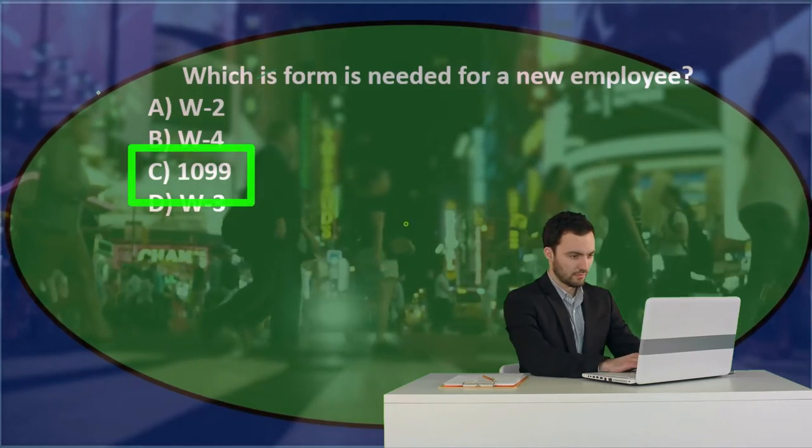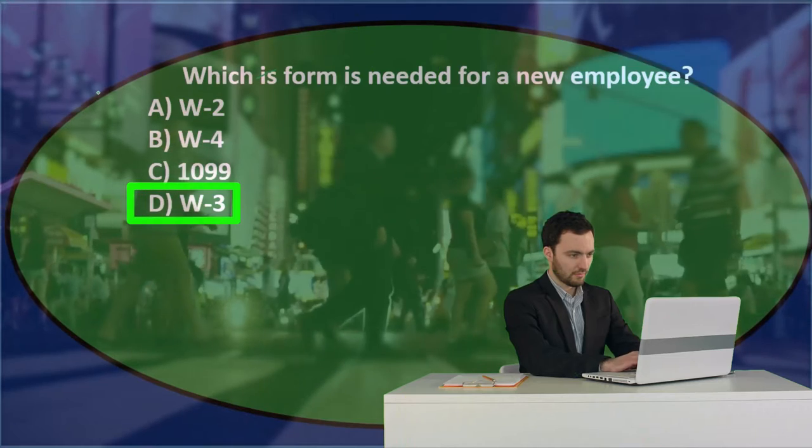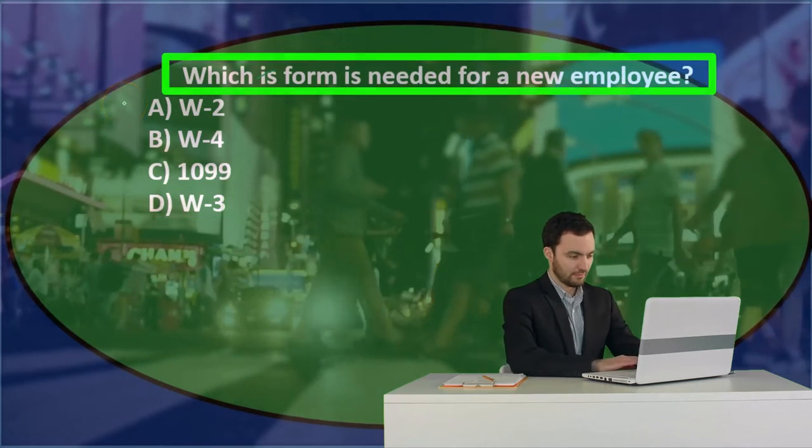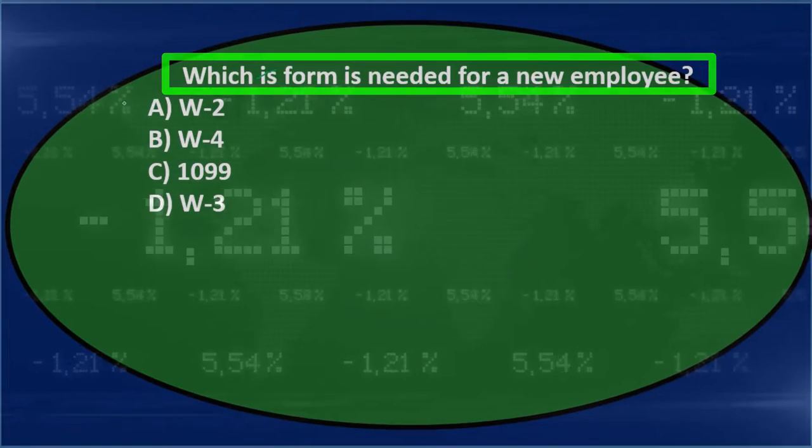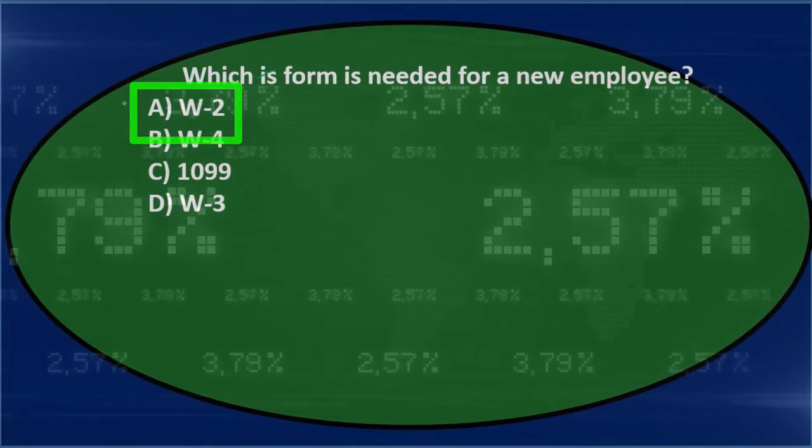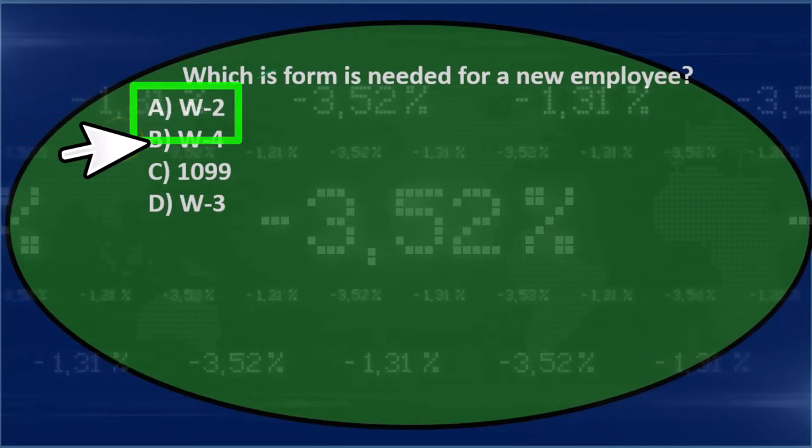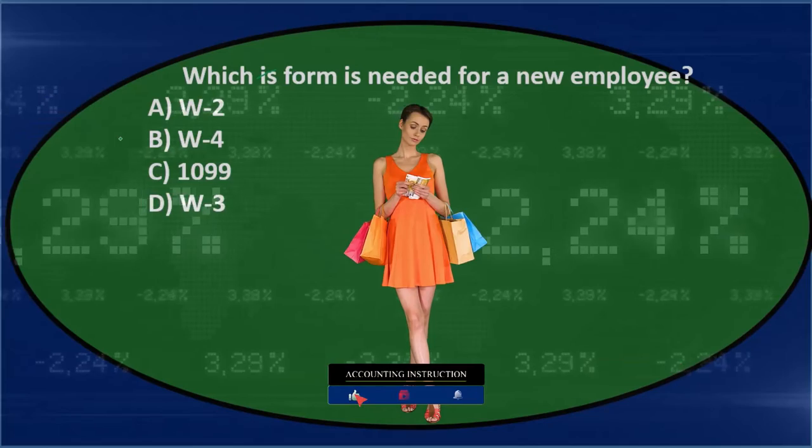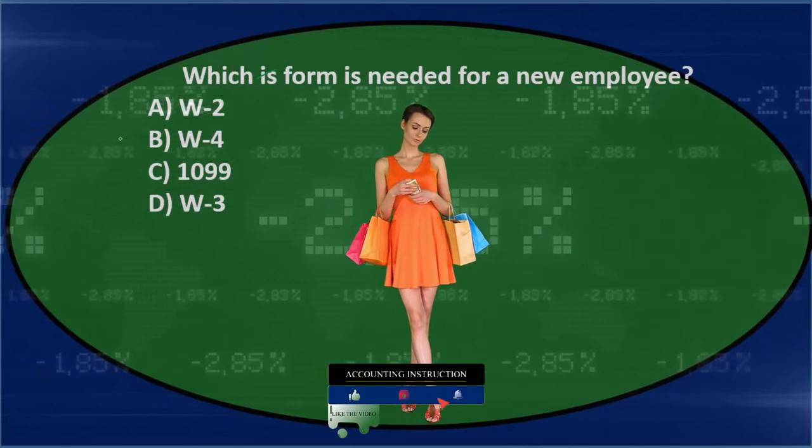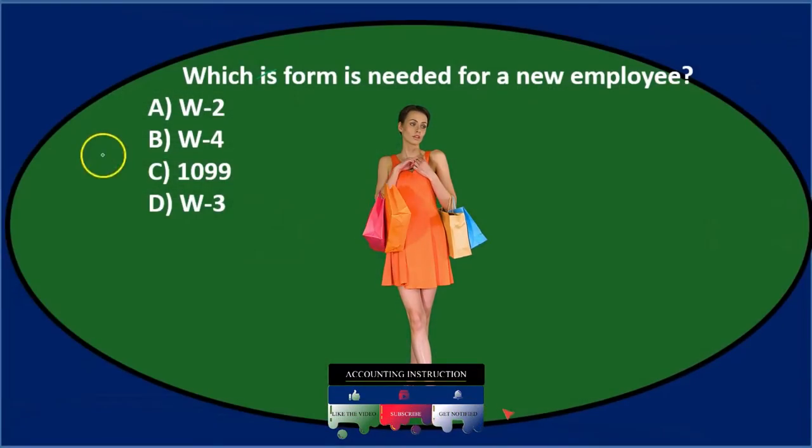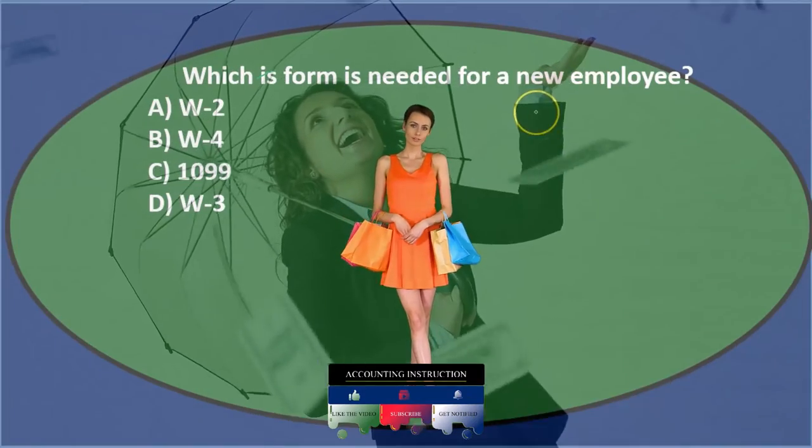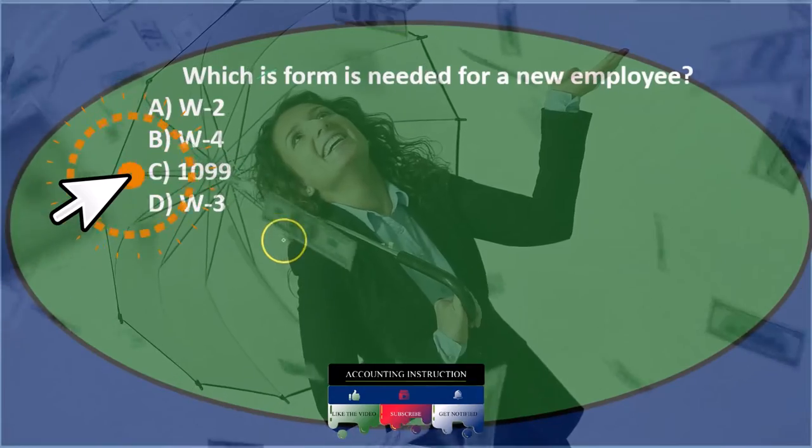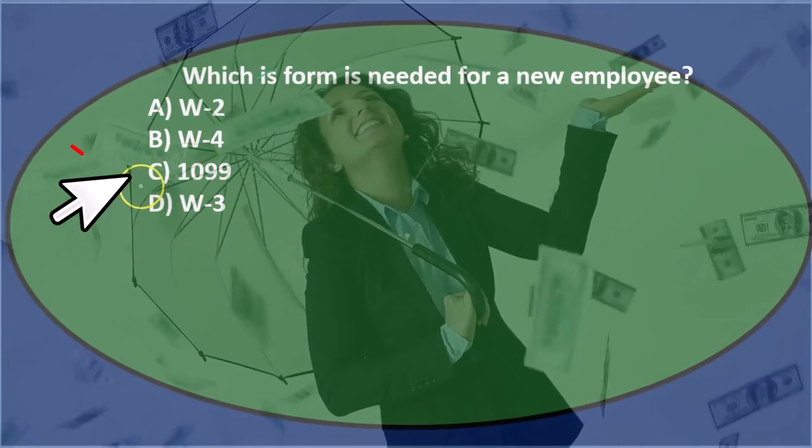Which form is needed for a new employee? A, a W-2. Now we might think of course at the end of the year that the new employee is going to need a W-2. So we might leave that. B says a W-4 form which may be less familiar to us than a W-2 but still seems reasonable so we can leave that. C says a 1099 and that's not really an employee form, that's a contractor form which is kind of like an employee but not really an employee. So I'm going to say it's not 1099.